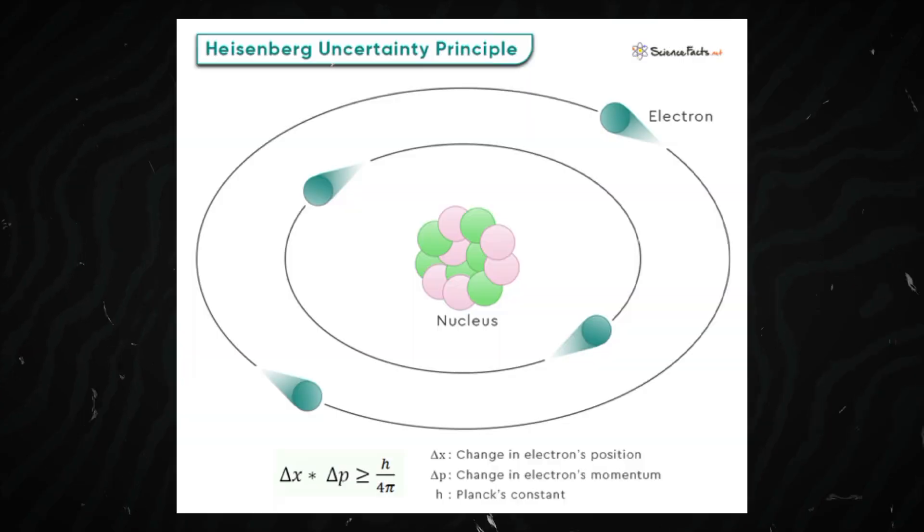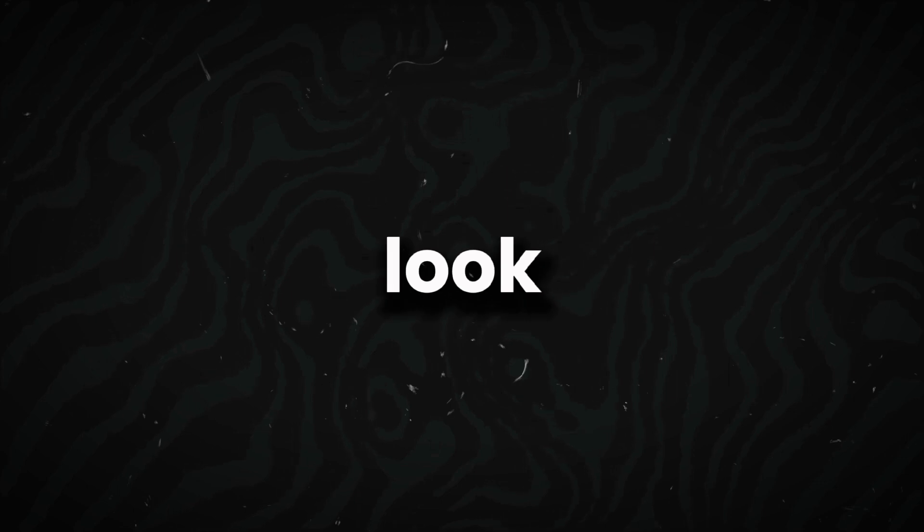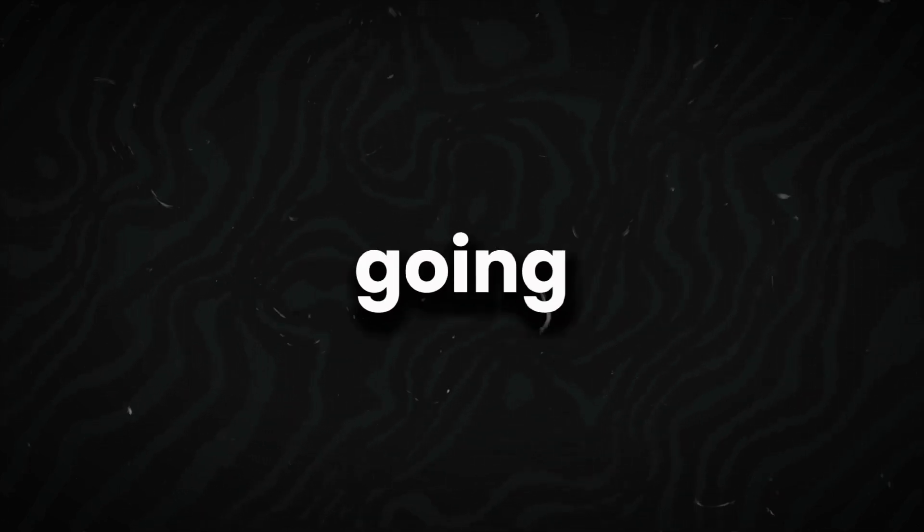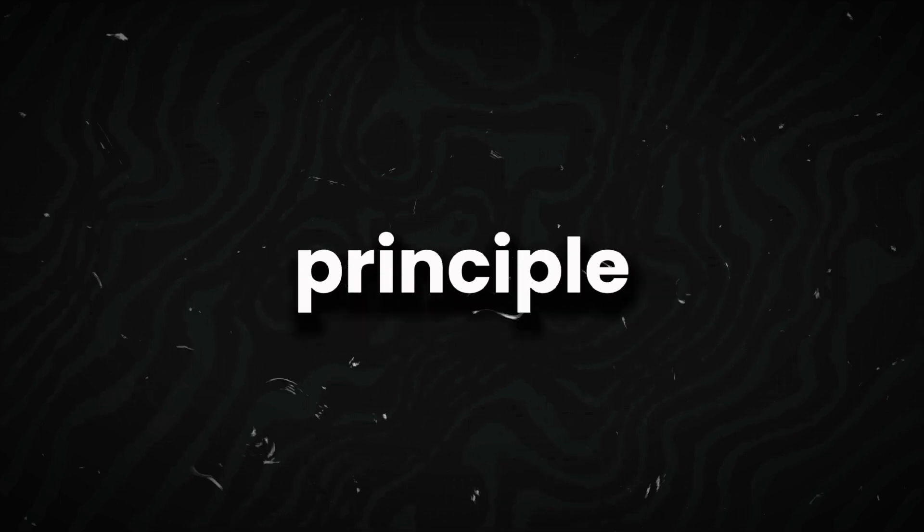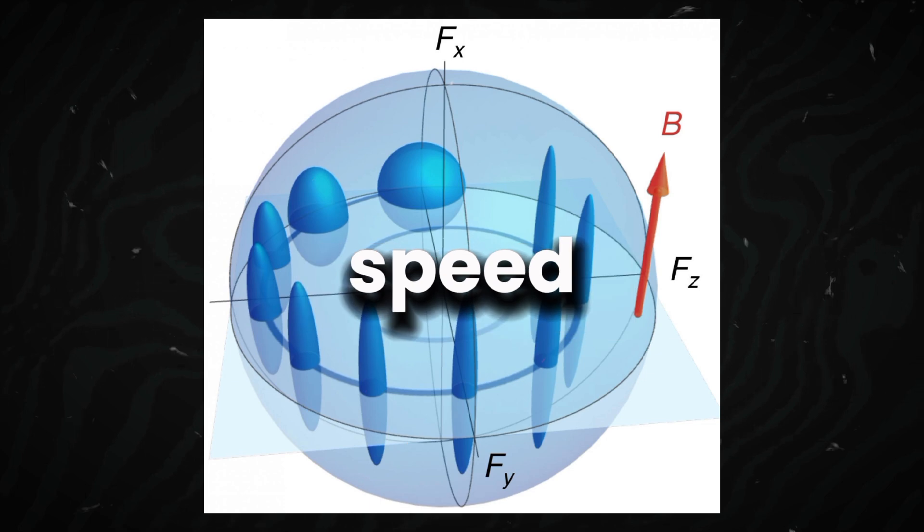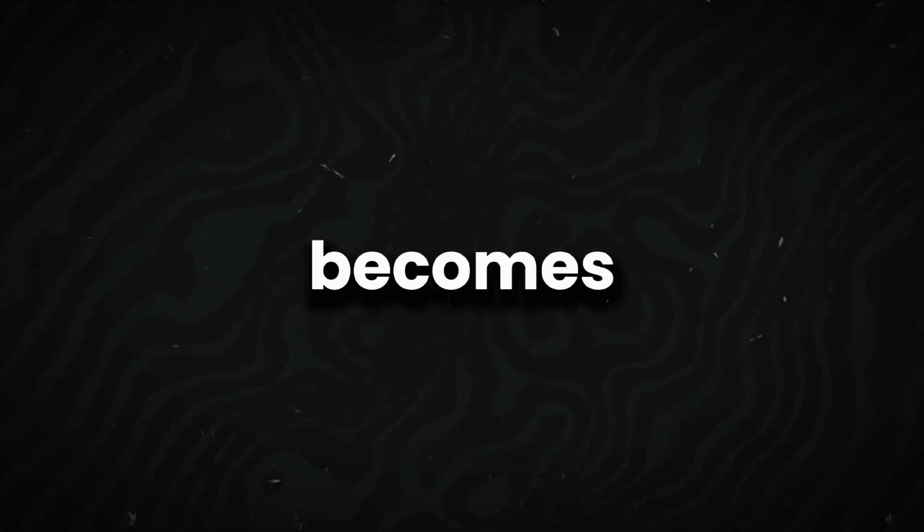Next is Heisenberg's uncertainty principle. Imagine trying to catch a super-fast tiny ball. The harder you look to pinpoint exactly where it is, the more it bounces and jiggles around, making it harder to know how fast it's going. That's Heisenberg's uncertainty principle. It means we can't know both the exact position and the exact speed of something super-small at the same time. The better we know one, the fuzzier the other becomes.